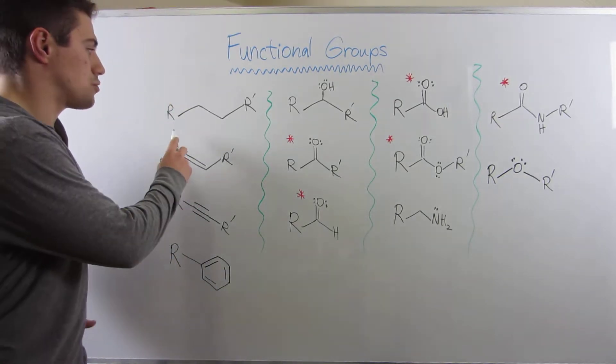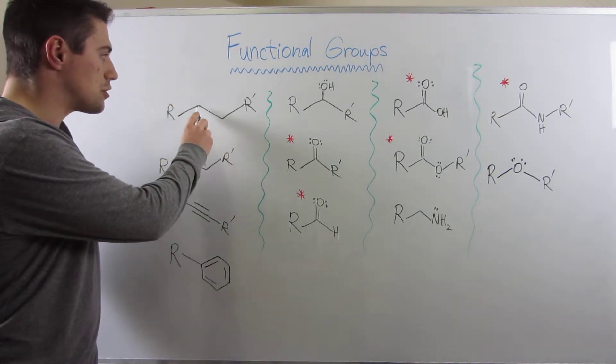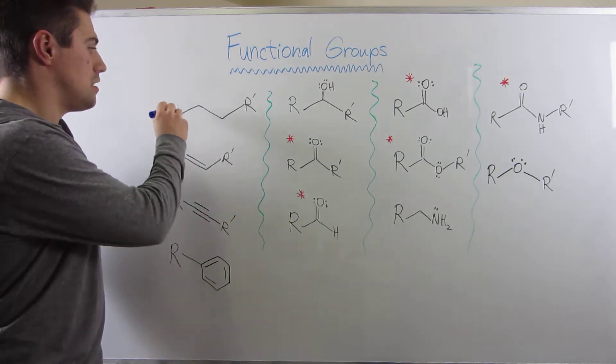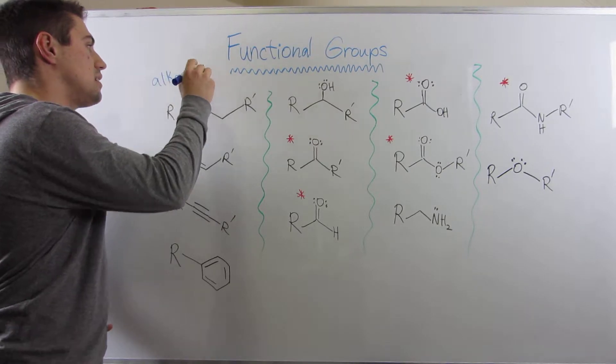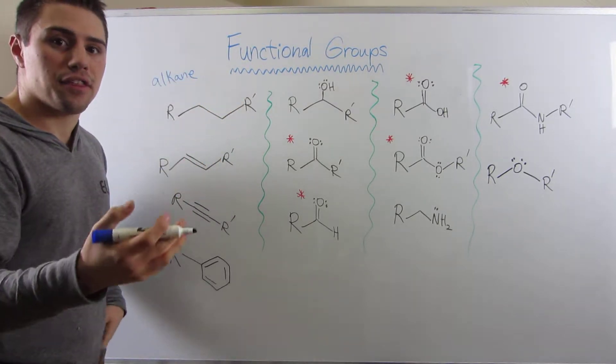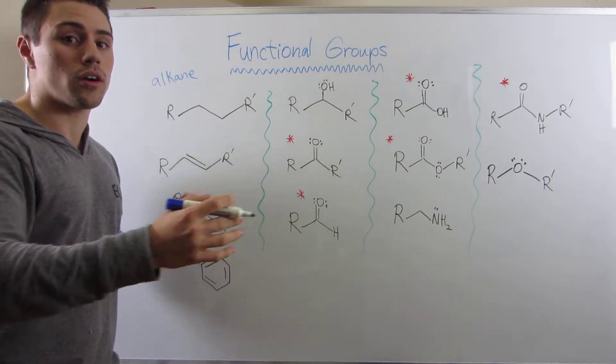Okay, so if you saw a structure just like this, where you're just in bond line, just zigzagging, this is what's called an alkane. And we've seen a bunch of these, right? Methane, ethane, whether they're two, four, eight carbons long.